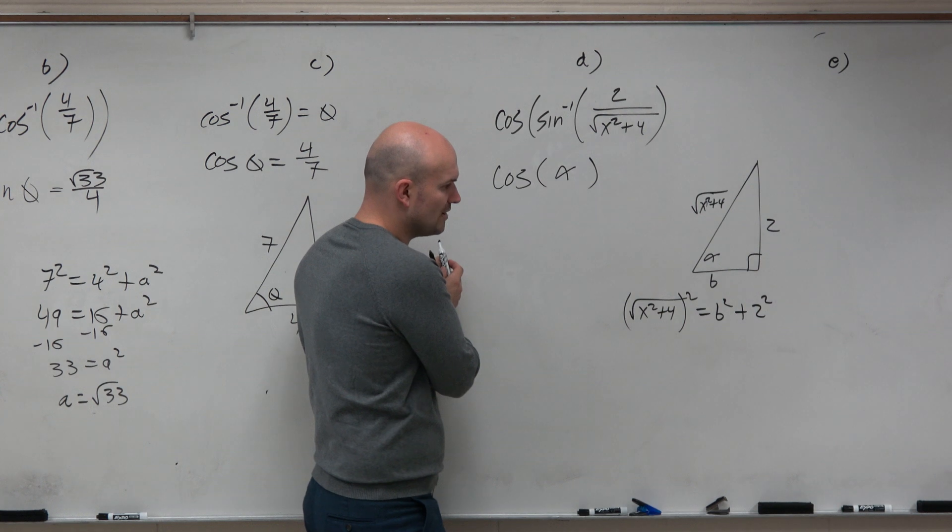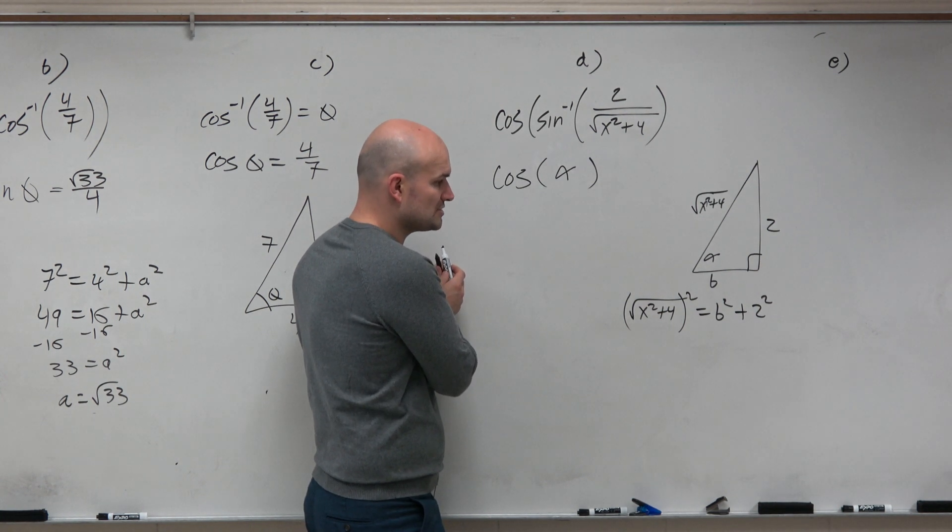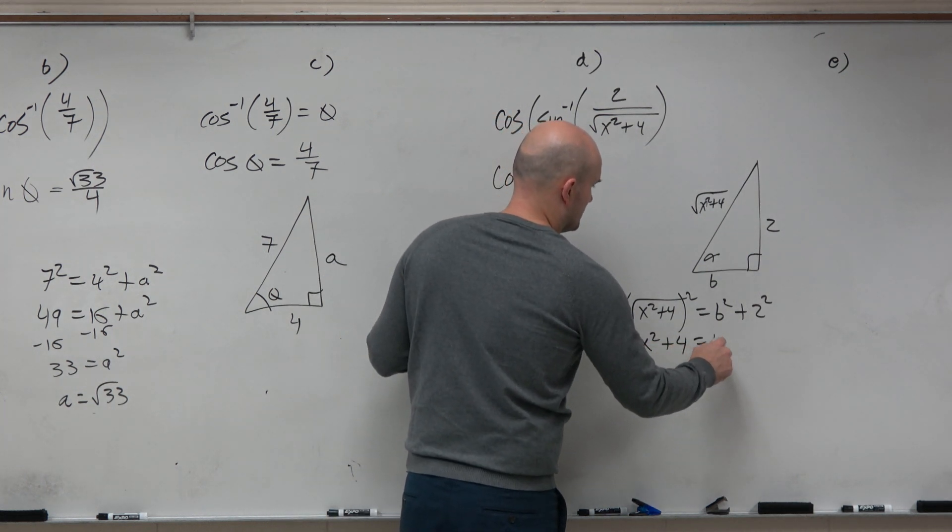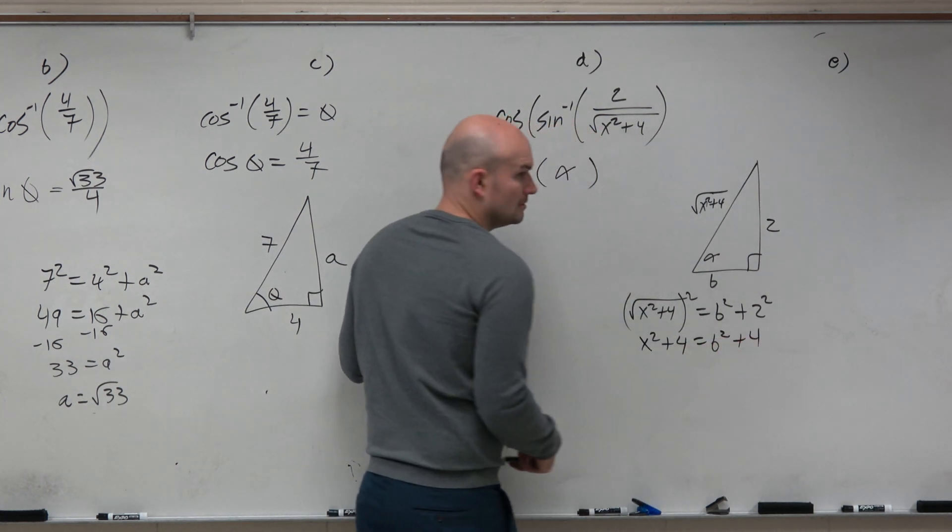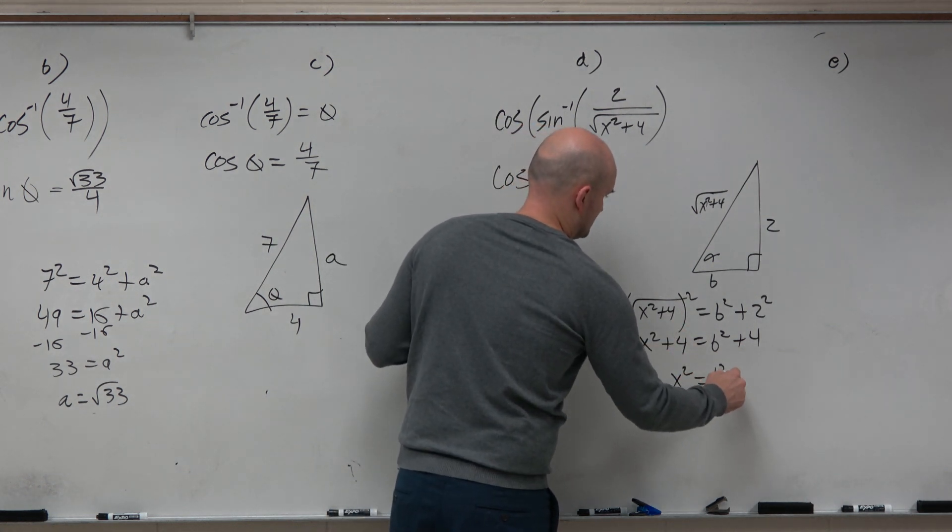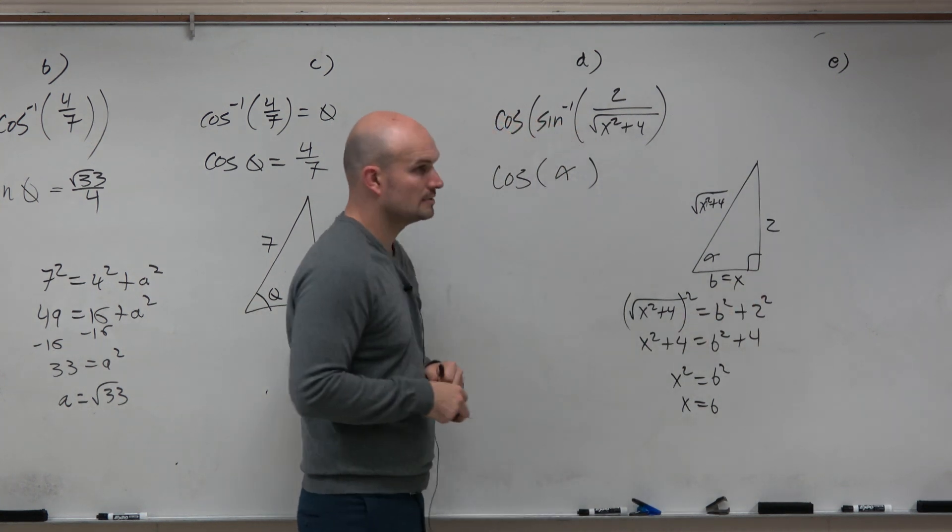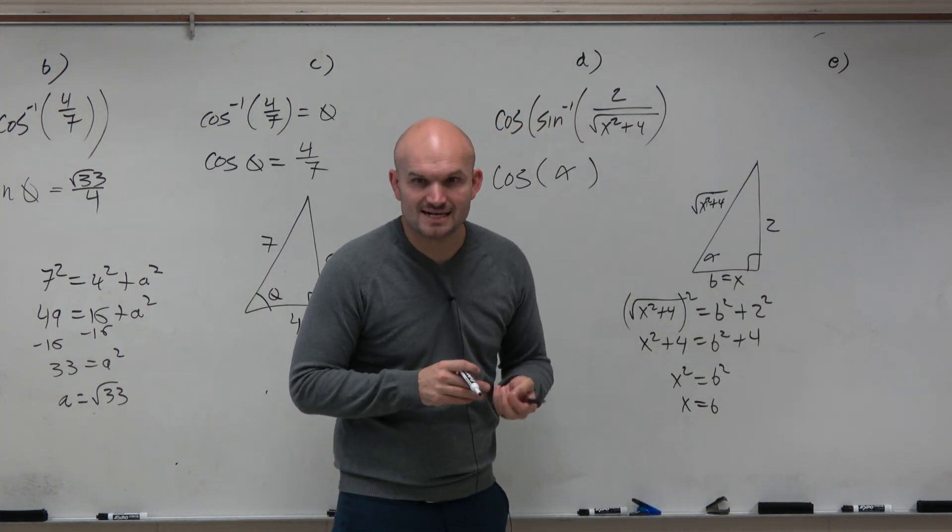Well, quantity square root x squared plus 4 squared is just going to be x squared plus 4. Subtract the 4's, take the square root of both sides and get x is equal to b.